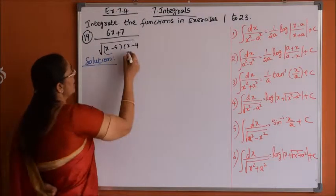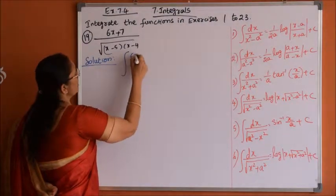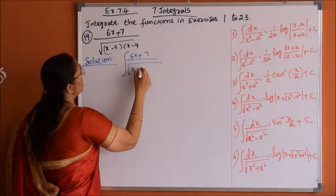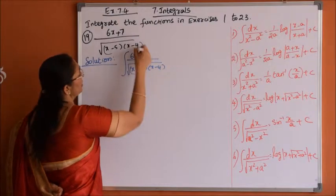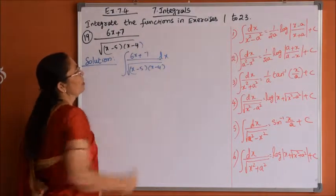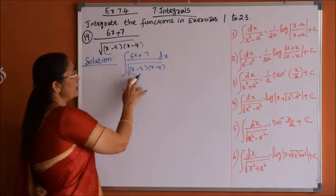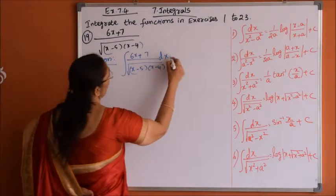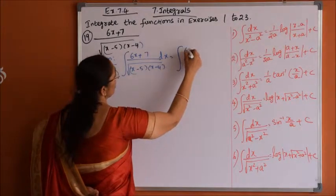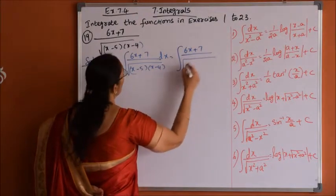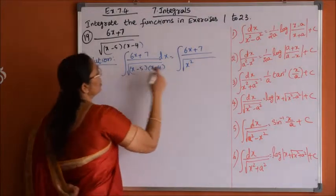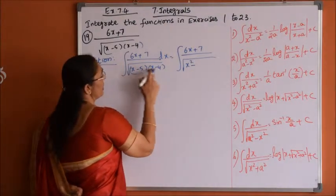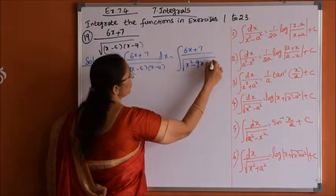Problem number 19: integration of (6x + 7) divided by root over (x minus 5) into (x minus 4) dx. We need to bring the denominator to a standard formula form. First, let us multiply out the denominator: x squared minus 4x minus 5x, which gives minus 9x plus 20.